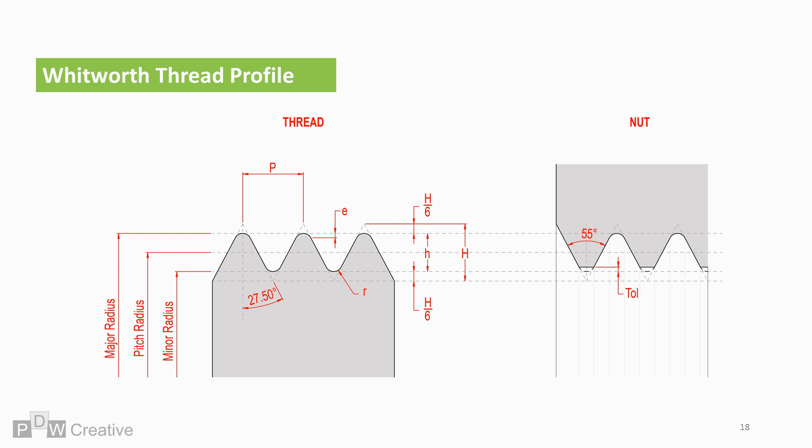If we overlay the nut, the major, minor, and pitch radii intersect the mating part. Both P and H remain relevant. The main difference is the minor diameter of the nut can be as small as the minor radius or offset by tolerance.